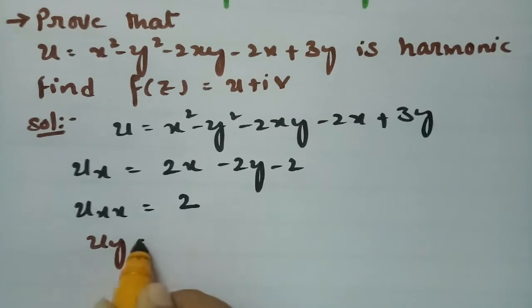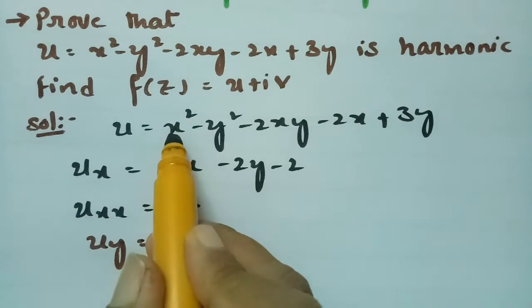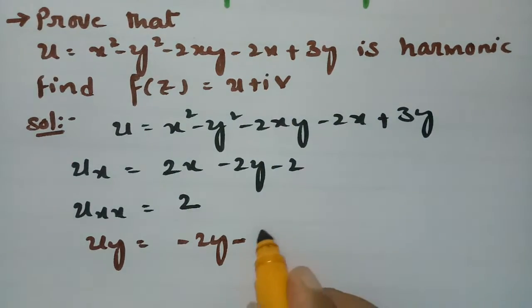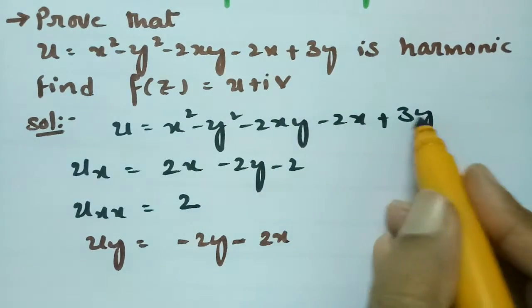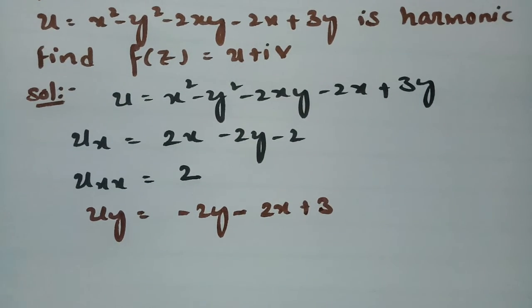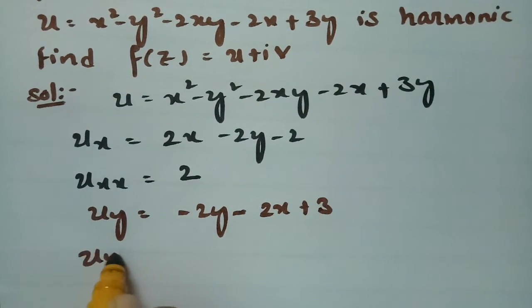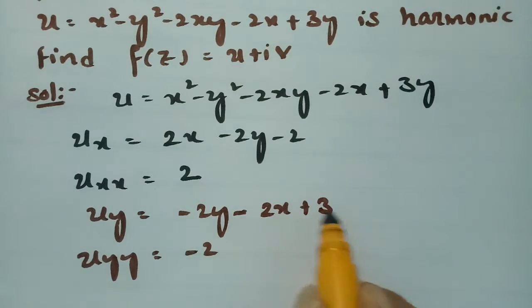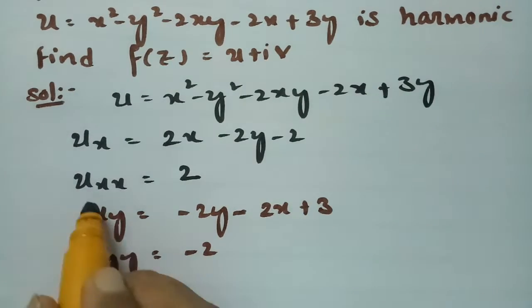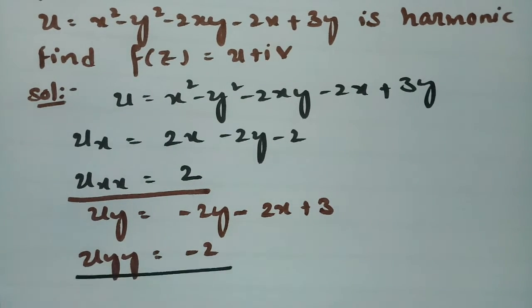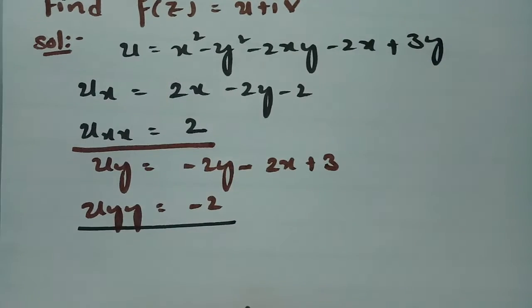Now taking the derivative with respect to y: ∂u/∂y = -2y - 2x + 3. The second derivative ∂²u/∂y² = -2, since the y term gives -2 and all remaining terms are zero.